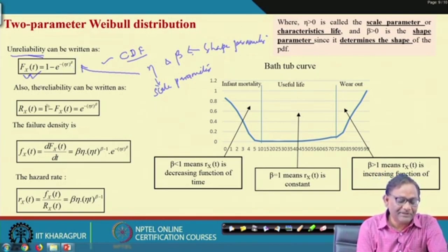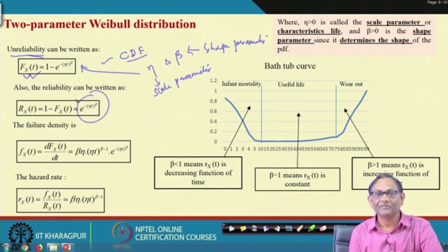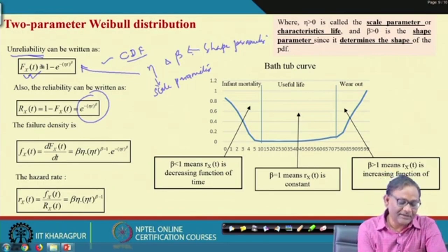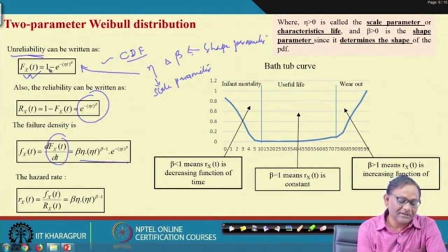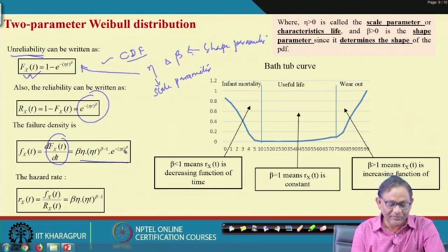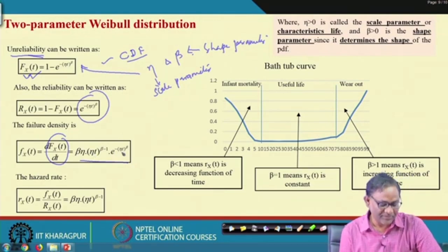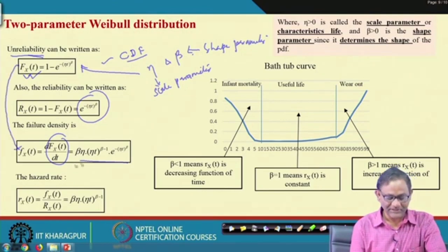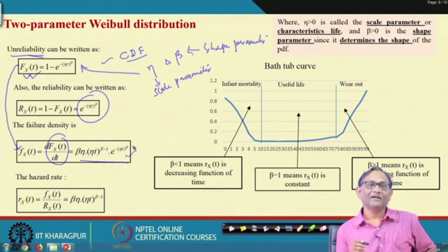If F(t) is the CDF, then R(t) = 1 − F(t) = e^(−η · t^β). Taking the derivative dF(t)/dt, you get the PDF: f(t) = β · η · (η·t)^(β−1) · e^(−η · t^β). For t = 0, f(t) = 0. These follow from standard calculus.